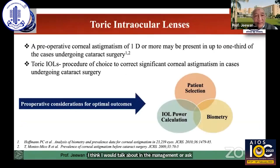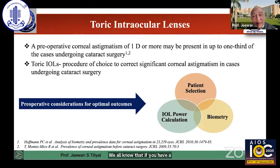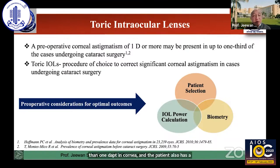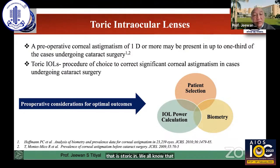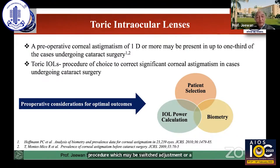No relevant financial disclosure from my side. We all know that if you have astigmatism which is more than one diopter in the cornea, and the patient also has a cataract, then that's a very good option for treating with cataract surgery and intraocular lens implantation, that is Toric intraocular lens implantation. We all know that IOLs, especially Toric IOLs, will give the most predictable results in correcting the astigmatism, especially the corneal astigmatism post-corneal procedures, or patients having a higher degree of cylinder. Because any other procedure, which may be suture adjustment, may not be as predictable as intraocular lenses.